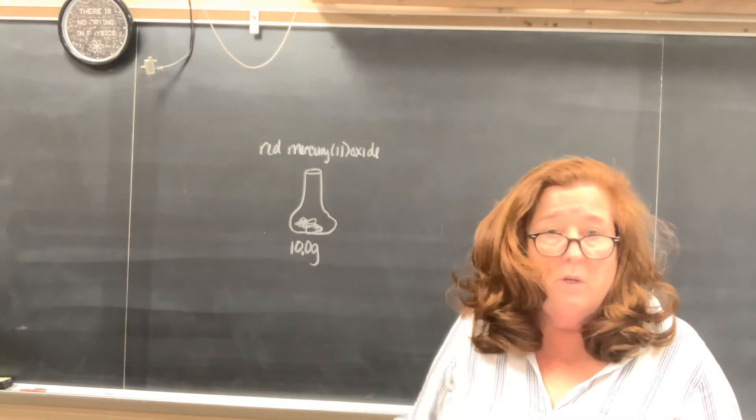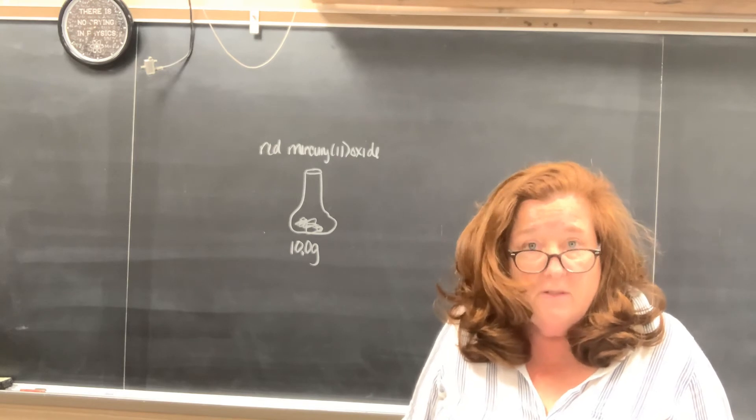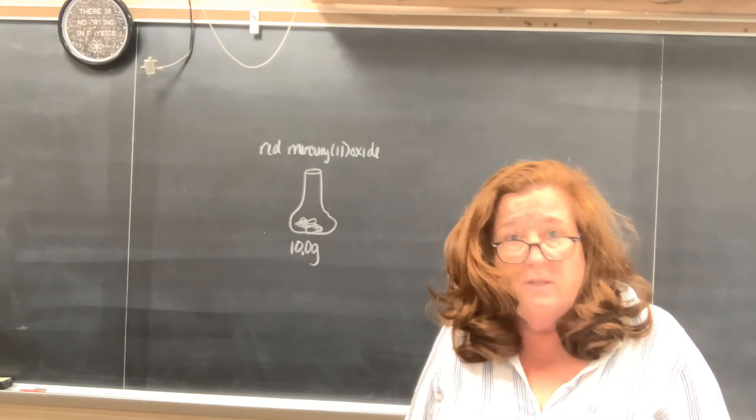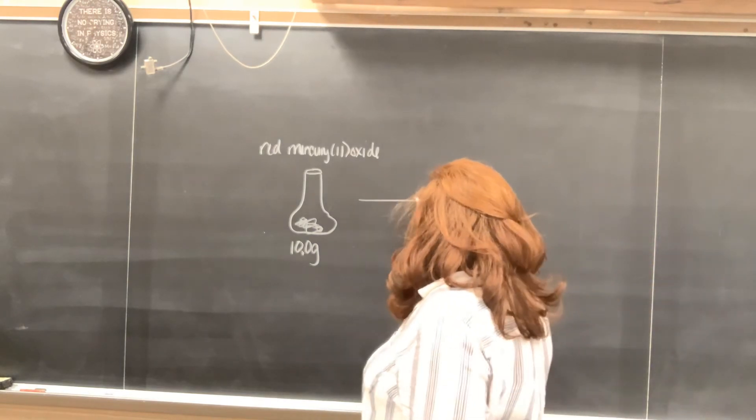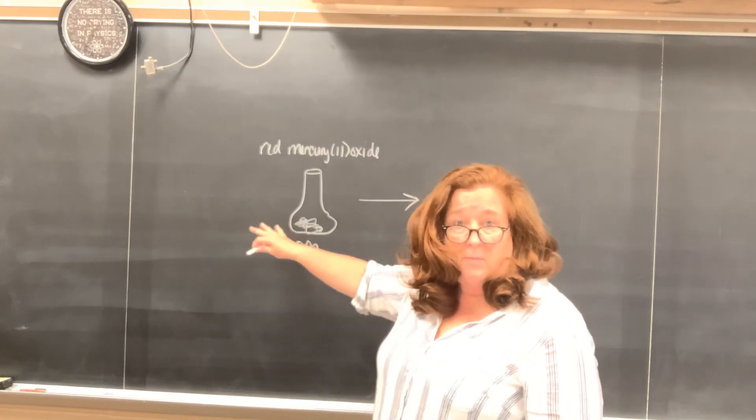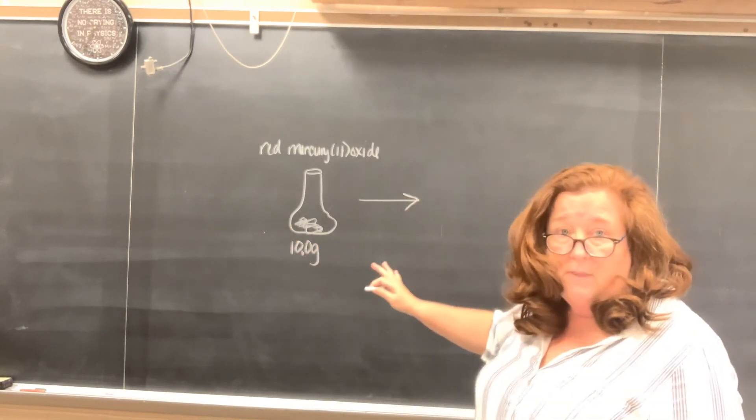That's a certain amount of mass, and they're saying that it's going to be heated. So we're going to take this flask and put it over a Bunsen burner on a hot plate. It's going to start to be heated up and there's going to be a reaction that takes place. So that's the after portion. This is the before, and afterward it's going to become something else.